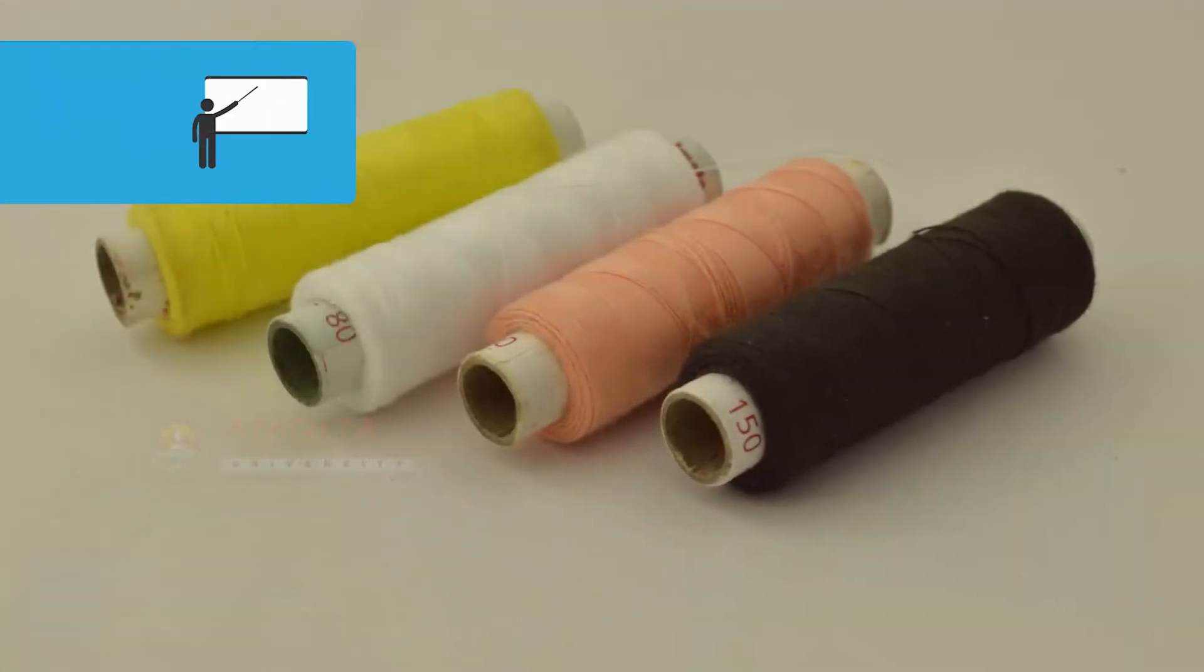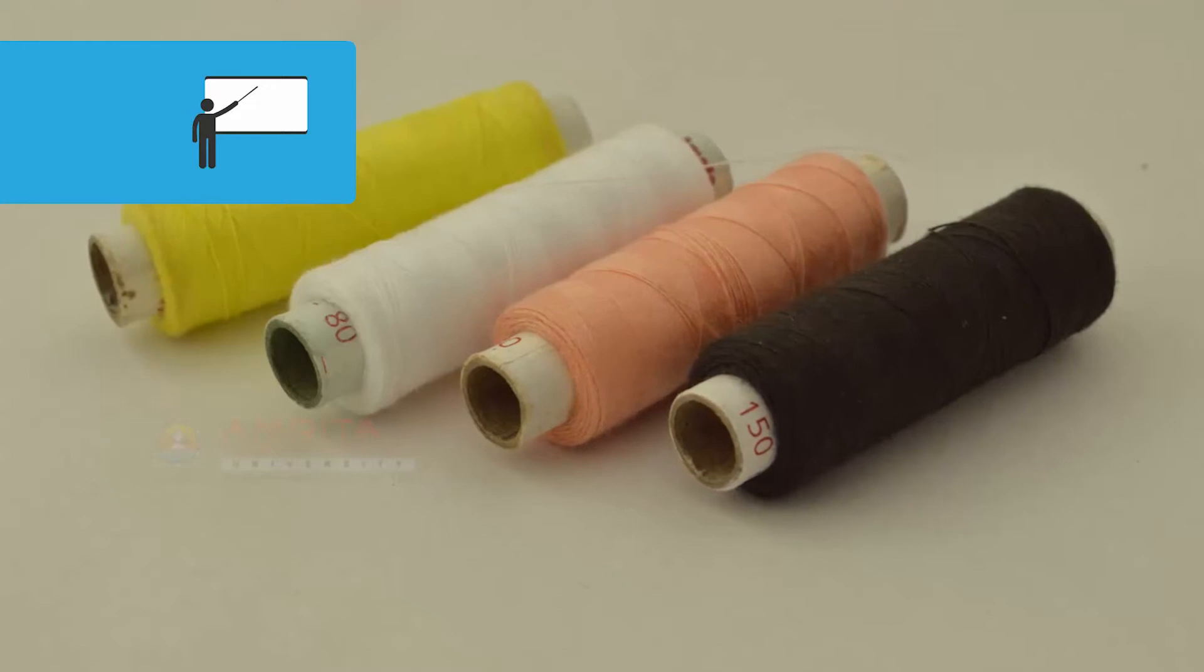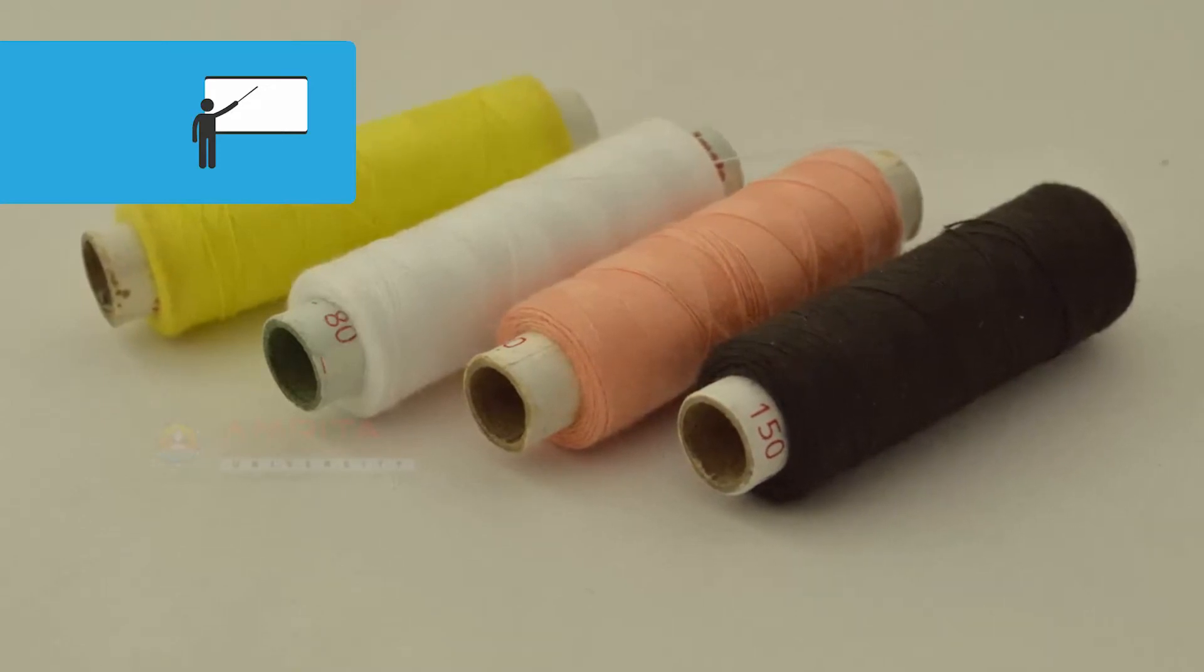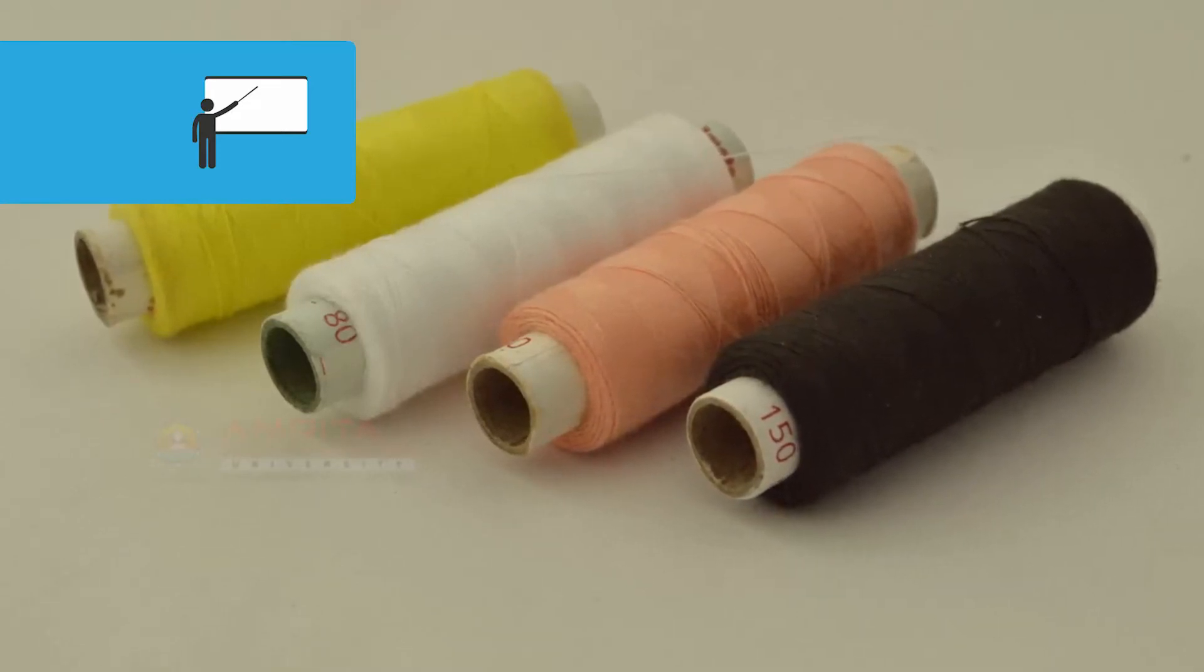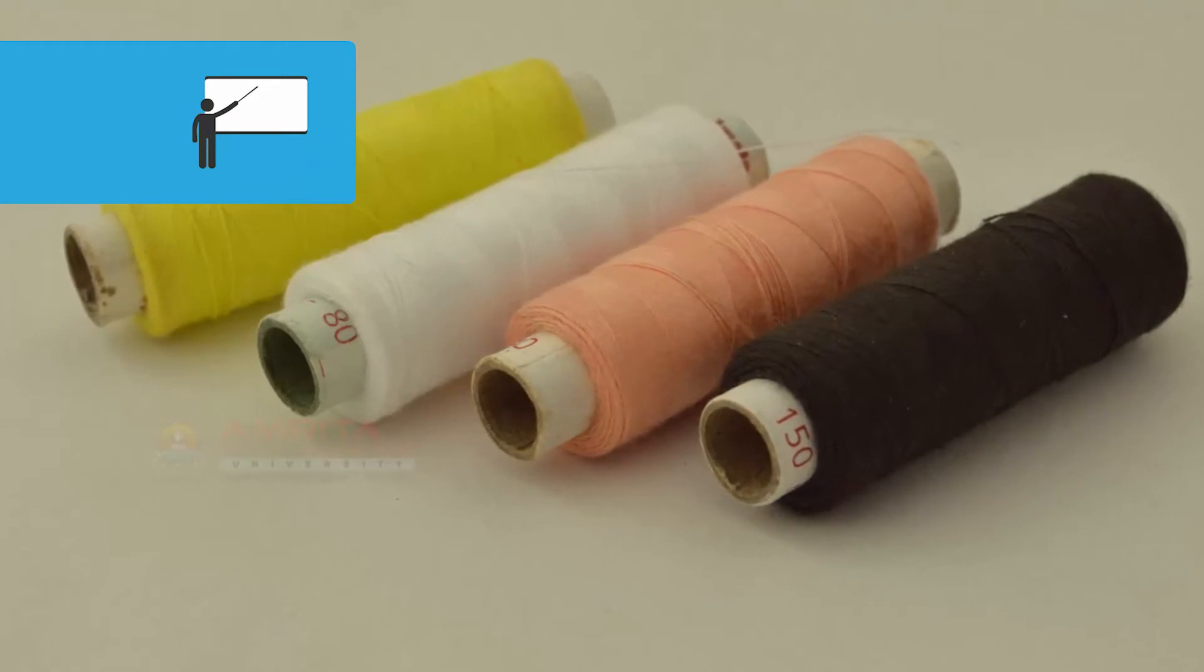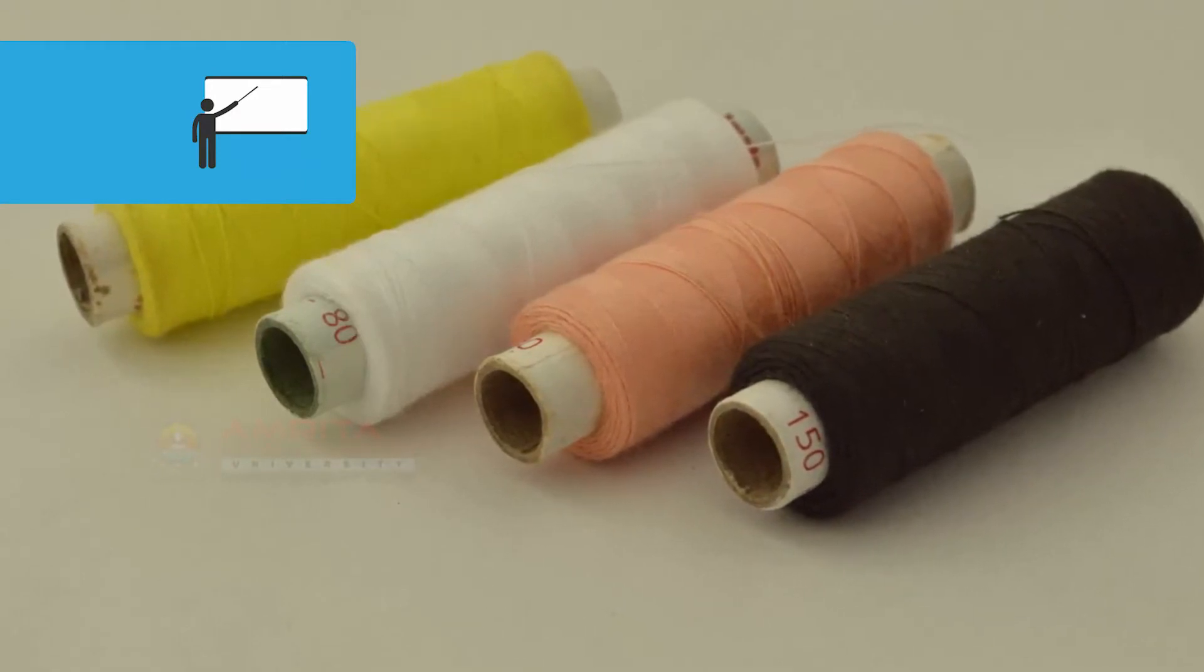You may use cheaper quality thread for tacking, as you will be removing these stitches once it is permanently sewn with the machine. This kind of thread would be easier to cut without a pair of scissors when the job is done.